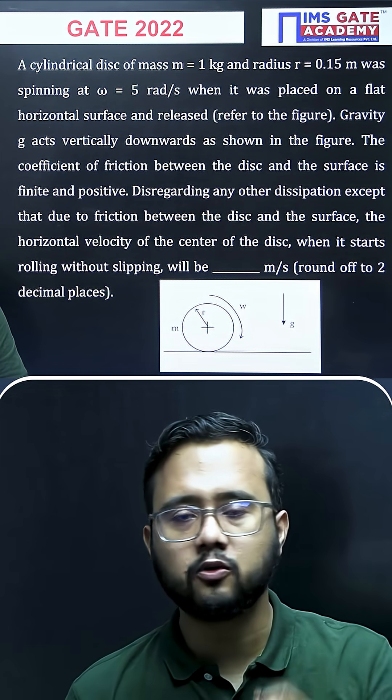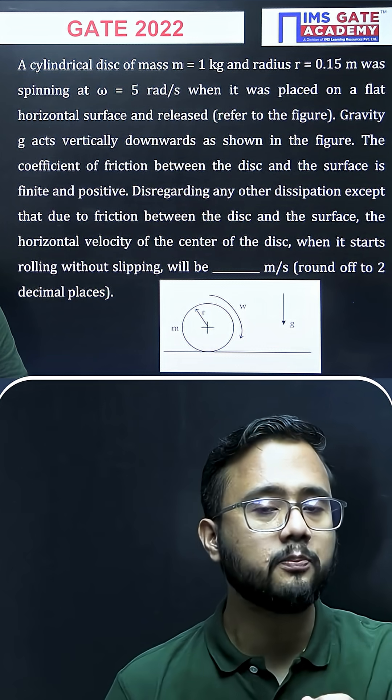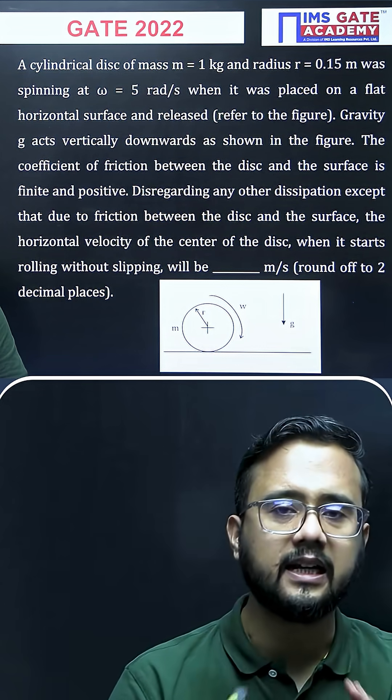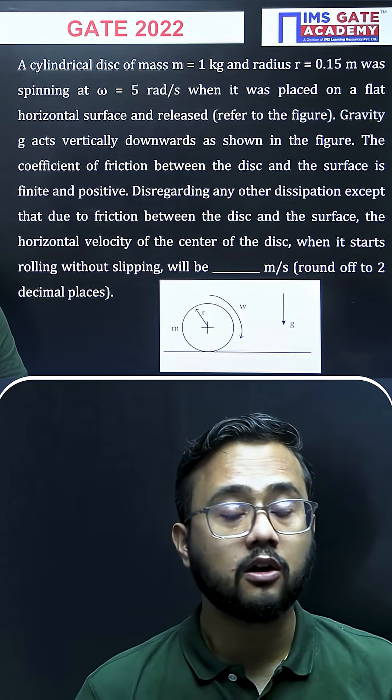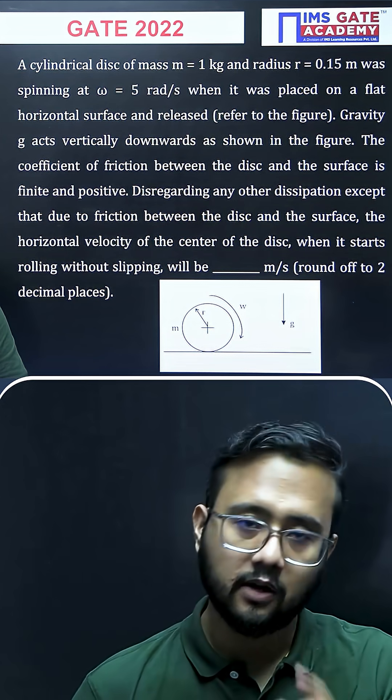Let us discuss this problem from GATE 2022 from engineering mechanics subject, topic rolling. Rolling is the most important topic for the GATE examination and we will be discussing this particular numerical in detail. In this question they are asking for the horizontal velocity of the center of the disc when there is pure rolling motion.